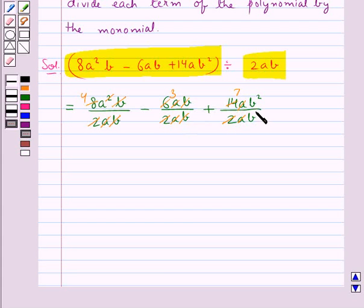Now one b cancels from the numerator with the b in the denominator. So we are left with 4a - 3 + 7b.